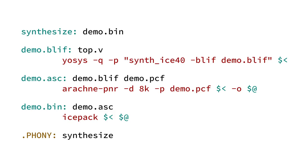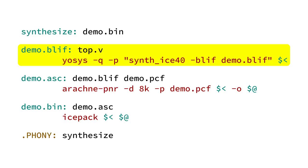To understand how the synthesis process actually works, let's take a look at the contents of the makefile. As you can see from the source code here, it involves three steps. The first of these steps involves Yosys, which is a powerful framework of conversions, optimizations, and transformations to digital designs. In this case it's being used to load up our Verilog code, simplify it, optimize it as best it can, and then map it into the primitives available in the ICE40.